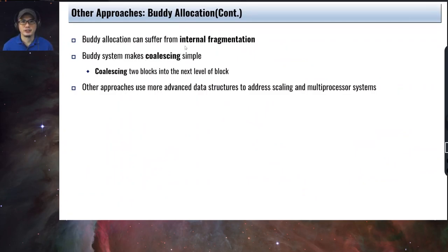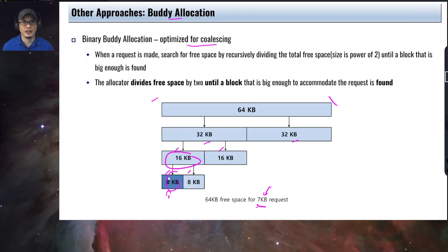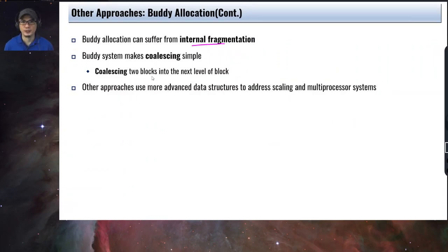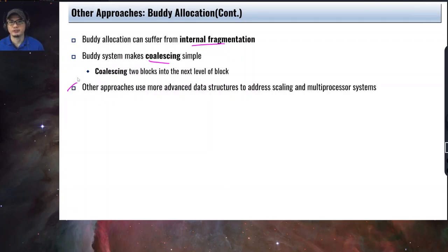Buddy allocation can suffer from internal fragmentation — we requested only 7 KB but the allocated chunk is 8 KB because sizes must be a power of 2. However, the coalescing part is simple because you simply have to change one bit in the address to merge buddies back together. There are other approaches that use more advanced data structures to address scaling, especially for multiprocessor systems.